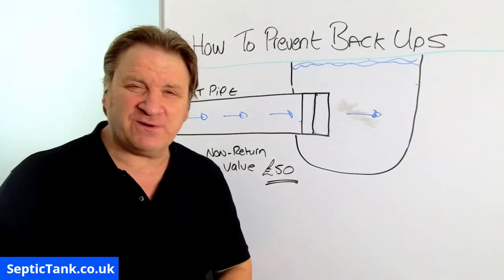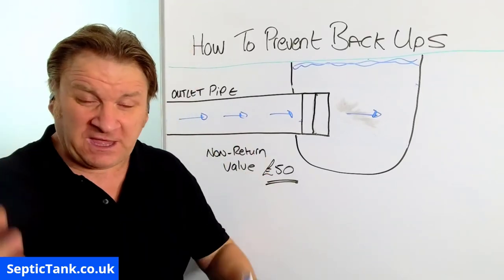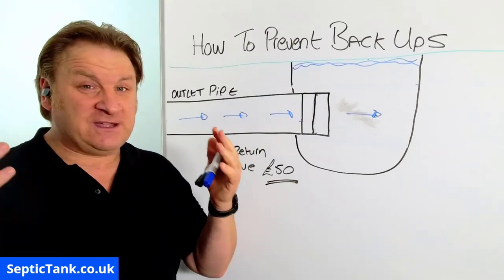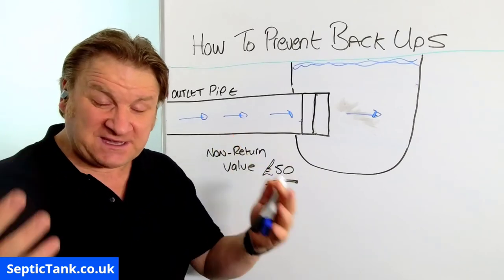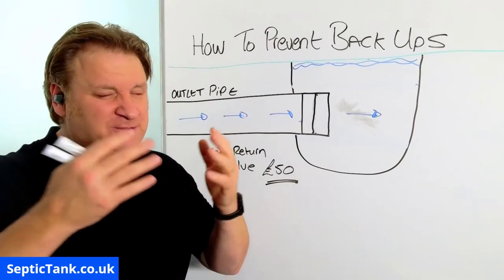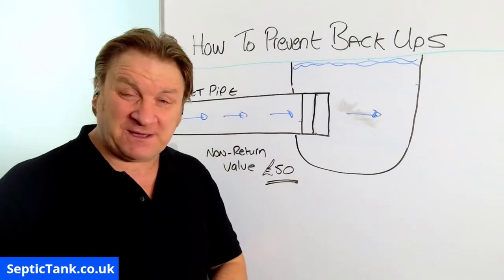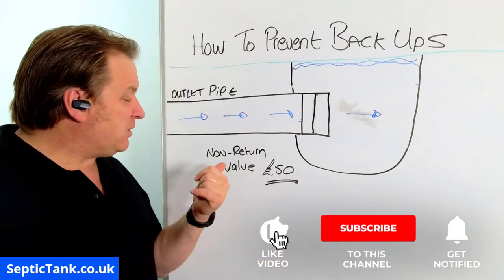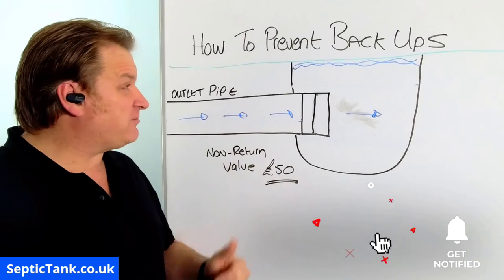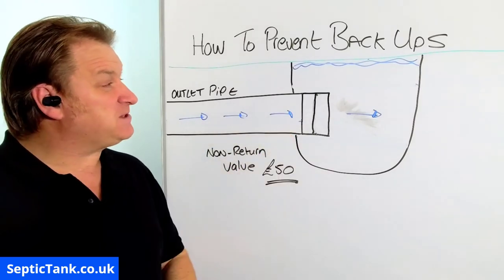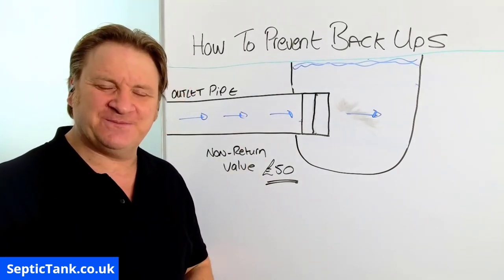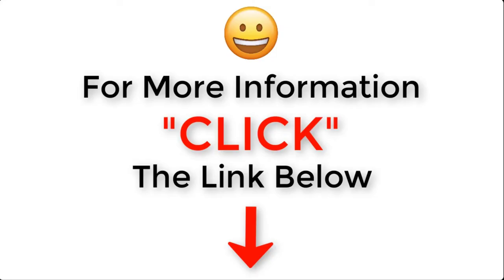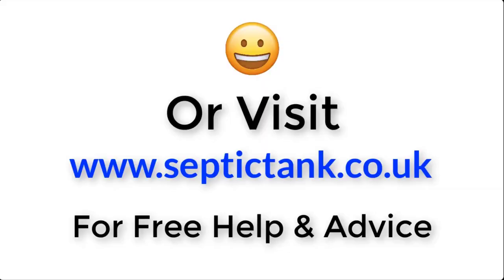So there you go — if you want to prevent backups, get yourself a non-return valve. Thank you very much for taking the time to watch this video. If you'd like to see more free videos, go to septictank.co.uk, or search for Septic Tank TV on Google or YouTube. If you subscribe to my Septic Tank TV YouTube channel, you'll be in with a chance to win a free non-return valve for the pipe coming from your sewage system into your ditch, river, or stream. Thanks once again for watching — take care and I'll see you soon. For more information click the link below or visit septictank.co.uk for free help and advice.